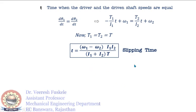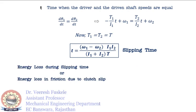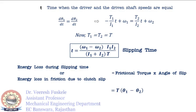During the slipping time there will be some energy loss. The energy loss in friction due to clutch slip is given by the frictional torque multiplied by the angle of slip: E = T·(θ1 − θ2), where θ1 is the angular displacement of the driver shaft and θ2 is the angular displacement of the driven shaft. This is how we find the energy loss and the slipping time — two very prominent topics asked in the gate exam.